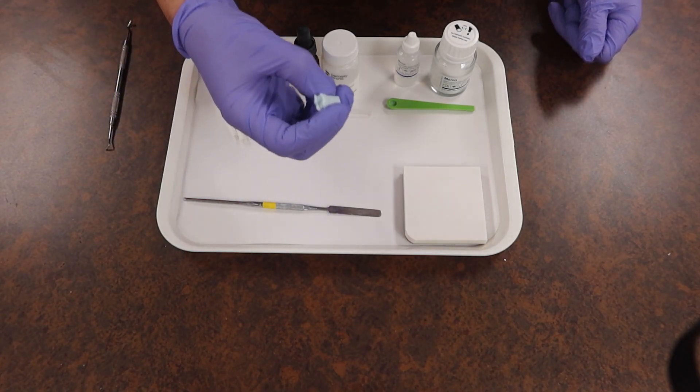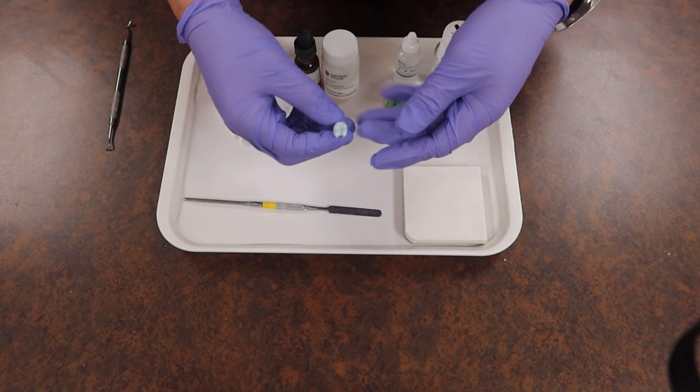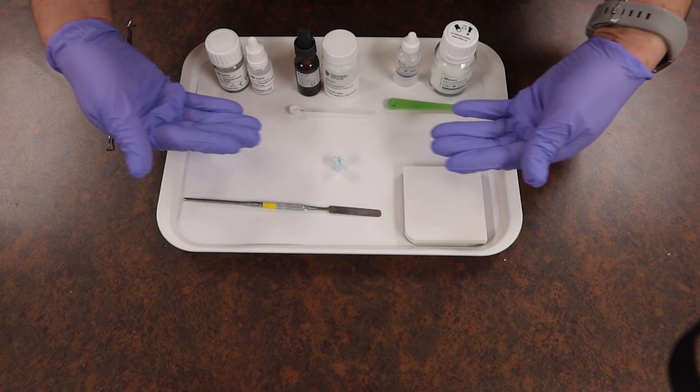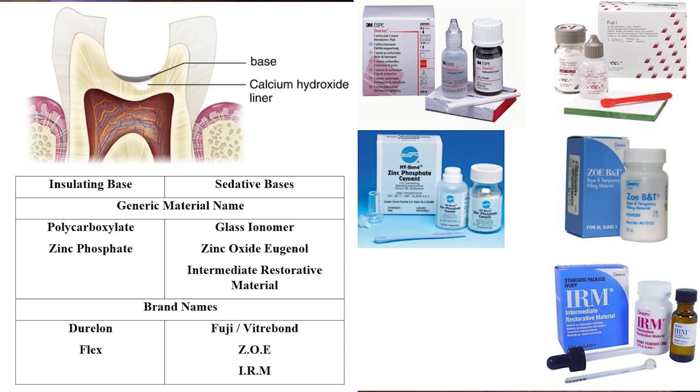For today's lesson, we are going to go over bases and how to place them into the small crevices that the doctor makes for us. We have a couple choices depending on what selection your doctor might want: polycarboxylate, IRM (also known as intermediate restorative material), or glass ionomer.